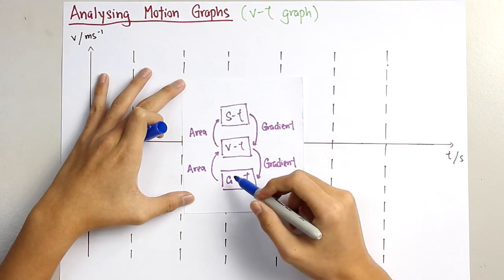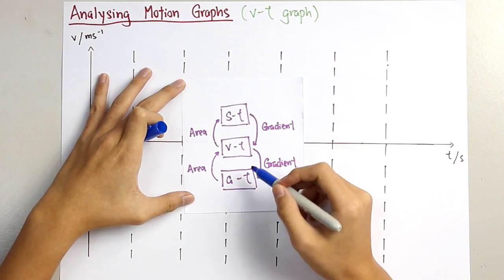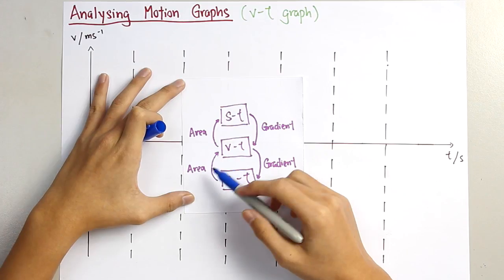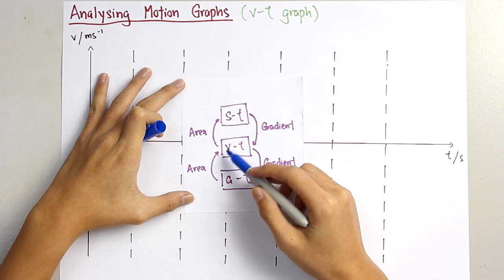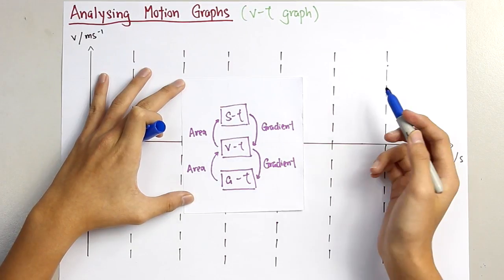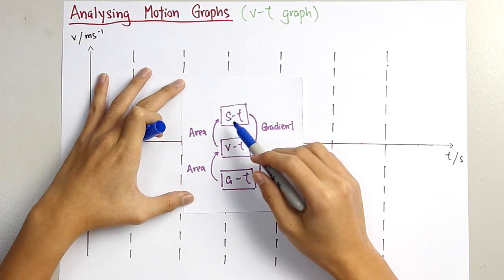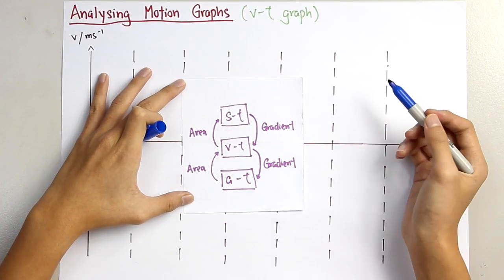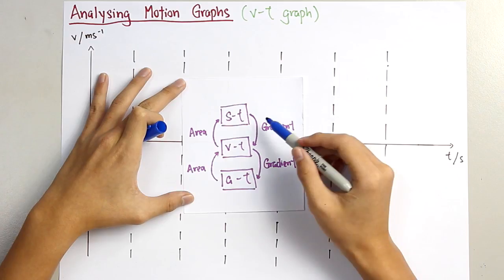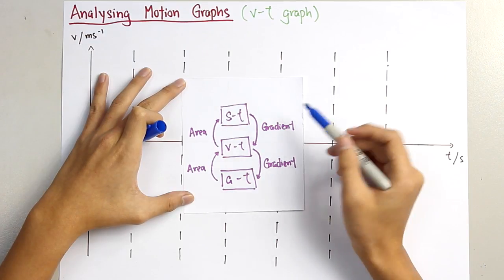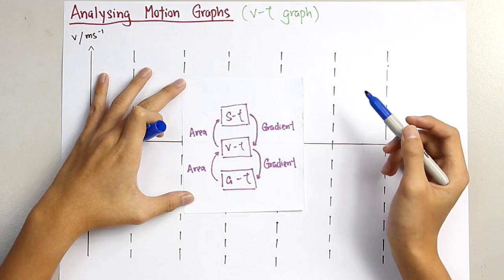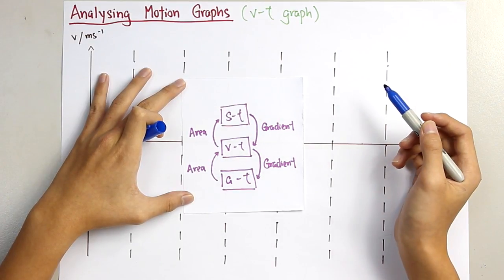For the AT graph — acceleration against time — the area under the graph represents the velocity. And for the ST graph, the gradient of the graph represents the velocity.